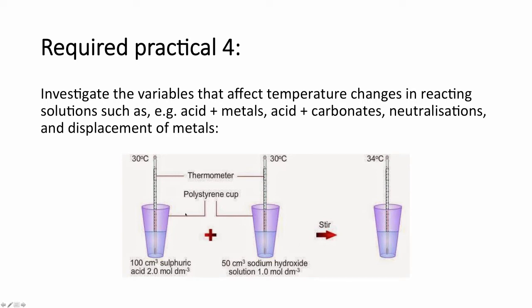In this investigation, you take a polystyrene cup because it's a good insulator. You take a solution, for example 100 cm cubed of sulfuric acid at two molar concentration, and then you add another reactant such as sodium hydroxide, 50 cm cubed, one molar solution. When we combine the two together and stir, we measure the maximum temperature rise. The variables for this could be the material of the polystyrene cup, the volume of acid, the volume of base, the concentration of acid, and the concentration of base.